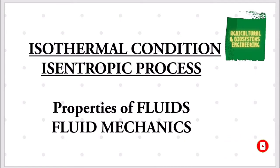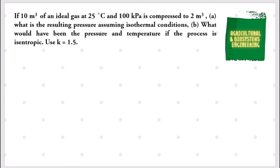We will be solving this problem: If 10 cubic meters of an ideal gas at 25 degrees Celsius and 100 kilopascals is compressed to 2 cubic meters, what is the resulting pressure assuming isothermal conditions? What would have been the pressure and temperature if the process is isentropic? Use adiabatic exponent value of 1.5.